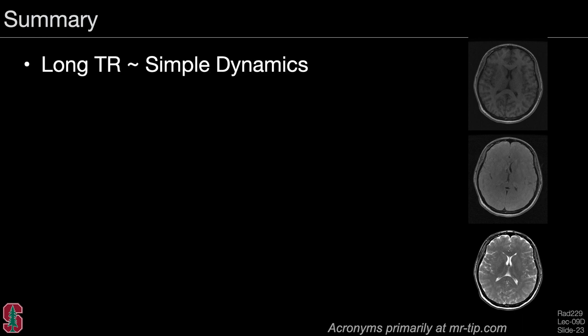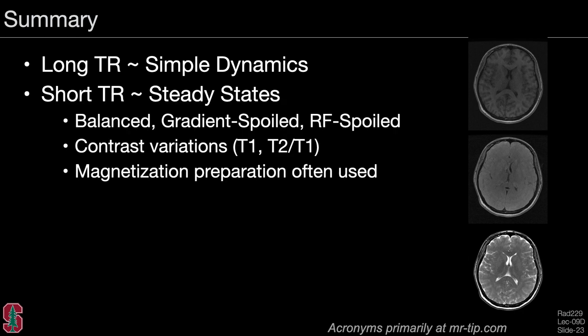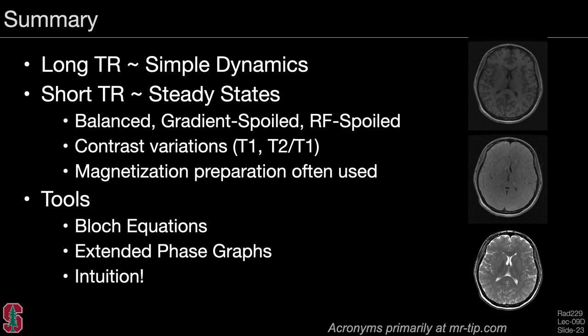In summary, for long repetition times the dynamics are very simple, but for short TR sequences, steady states form and the signal is very dependent on the type of spoiling used. We have different kinds of contrast: T1 or T2 over T1. We often use magnetization preparation with these approaches, as we will see in a subsequent lecture. The tools include Bloch equations for matrix derivation and extended phase graphs, which are appropriate for gradient-spoiled and RF-spoiled sequences.